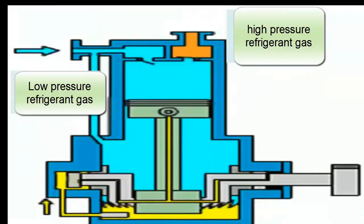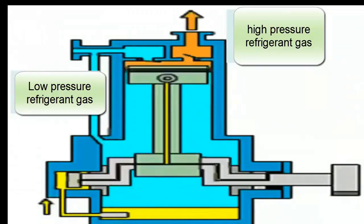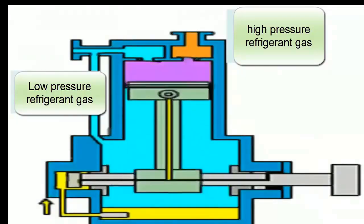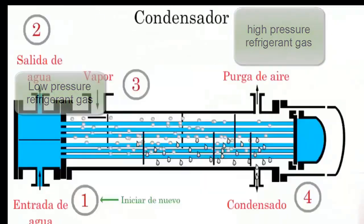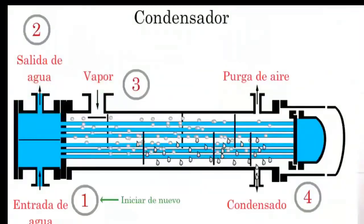Condensation is going from the vapor state to the liquid state. Once compression is done, we pass the refrigerant through the condenser, where with high pressure and a cooling that the refrigerant undergoes, the passage from vapor to liquid occurs. So the condenser requires two fundamental things: high pressure and also cooling.